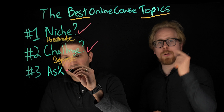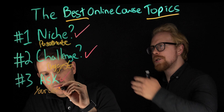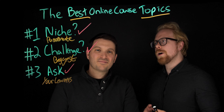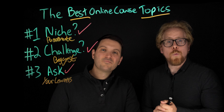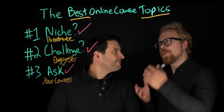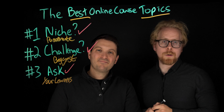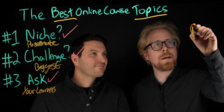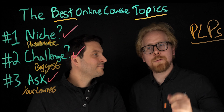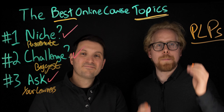You want to ask your learners. For example, if your niche is yoga instructing and the biggest challenge is how to do aerial yoga moves, you want to speak to your learners and actually ask them: what are the biggest challenges related to aerial and acrobatic yoga? Your learners are going to dictate the best online course topic. In our course, we call learners PLPs — perfect learner profiles — and when you build a course, this is all that matters: a course topic that speaks to your PLPs.